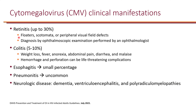With CMV retinitis, patients experience floaters (spots in vision), scotomata (partial loss of vision or blind spots in an otherwise normal visual field), and peripheral visual field defects. Diagnosis is made by an ophthalmologist through eye examination. CMV colitis presents with weight loss, fever, anorexia, abdominal pain, diarrhea, and malaise, and can be severe if it causes hemorrhage and perforation, which is life-threatening.